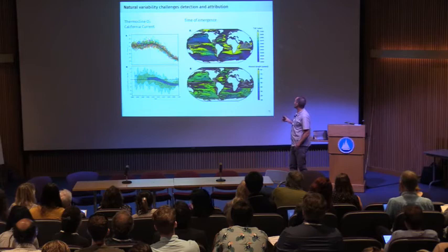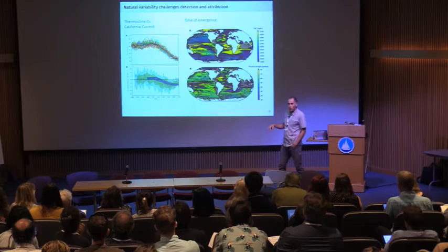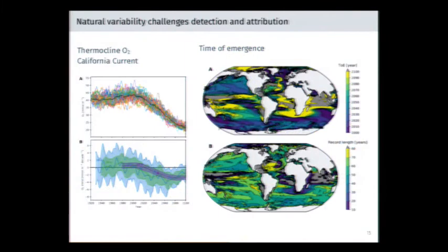In the tropics, where we see net oxygen increases, the timescale is much longer. This map provides a sense of the record length necessary to achieve emergence — and these are fairly long records. This poses a significant challenge to the observational record.